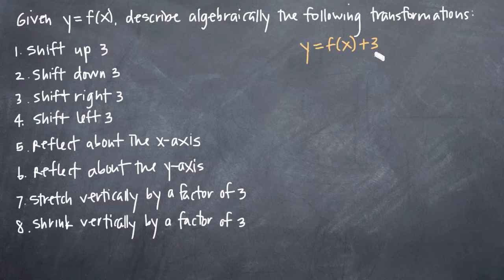And the same will go for shifting down 3. We'll just get y equals f of x minus 3. This would shift the graph down vertically 3 units.